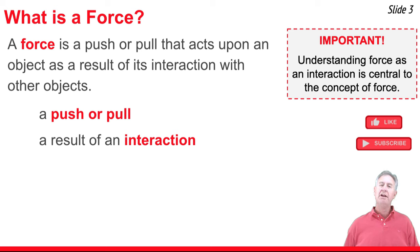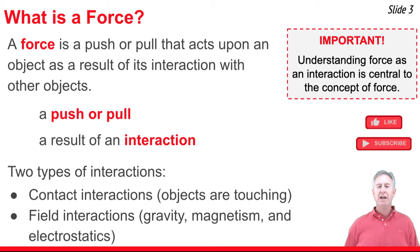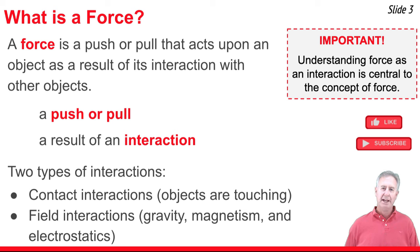When we think about interactions with other objects, we classify them as one of two types. First, there are contact interactions — results of objects touching other objects. Second, there are field interactions, which have something to do with gravity, electricity, and magnetism. We'll talk about both, but we'll begin with contact interactions.